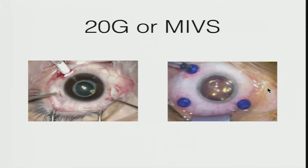Regarding surgical approach: some still prefer 20-gauge surgery for severely traumatized eyes, but MIVS surgery can still do a decent job. If there are large clots, they can clog the cutter, so 20 or 23 gauge may be preferred. For liquid blood, 23, 25, or 20 gauge all work. For peripheral retinal dialysis with intact globe integrity, a scleral buckle may be sufficient.